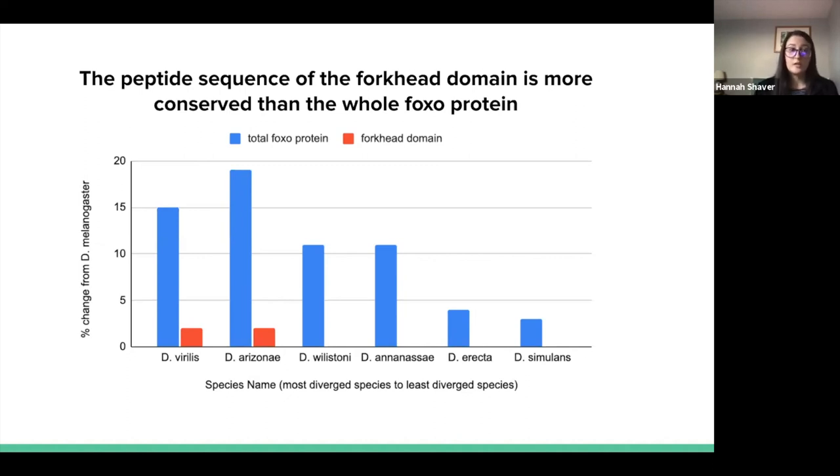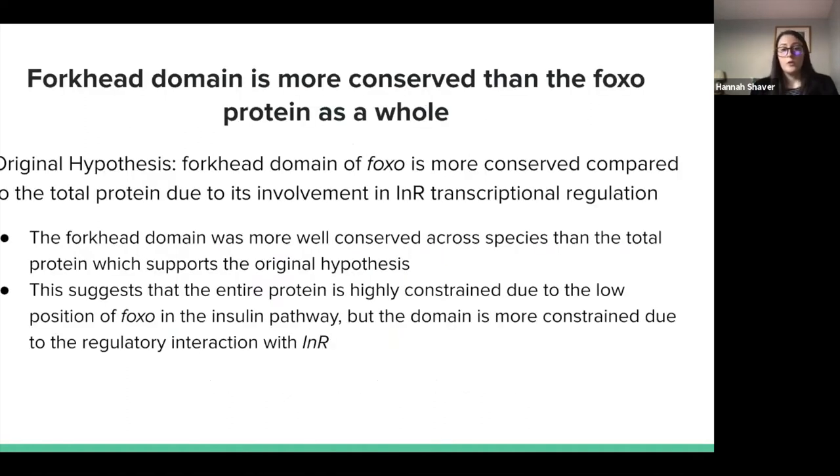In conclusion, the forkhead domain is in fact more conserved compared to the total protein. This supported our original hypothesis. The forkhead domain is more well conserved across species than the total protein, suggesting the entire protein is highly conserved due to FOXO's low position in the insulin pathway, but the forkhead domain is even more constrained due to the regulatory interaction it has with INR.